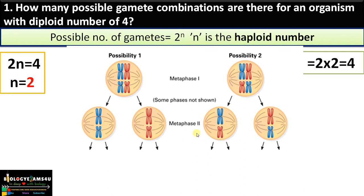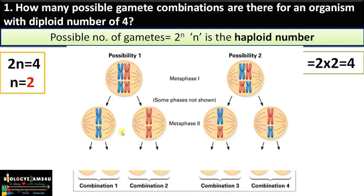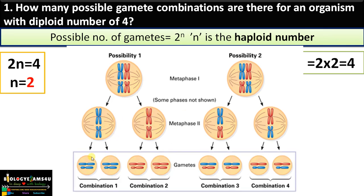After metaphase 2: during metaphase 1, homologous chromosomes are separated during anaphase, whereas at metaphase 2, sister chromatids are separated. So in the resulting gametes, the sister chromatids are separated. As you can see, there will be a long chromosome of chromosome number 1 and a short blue-colored chromosome of chromosome number 2.